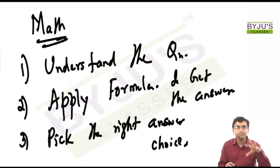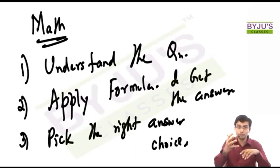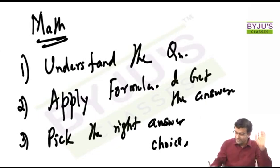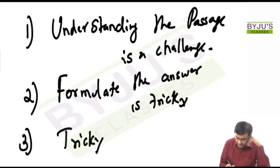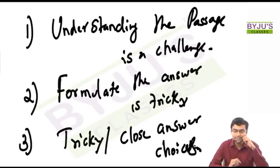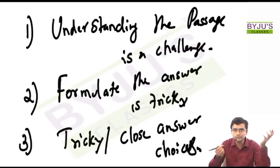Now go back to any math question — we never look at the answer choice and guess what the answer is. We try to solve it and then pick the right answer choice. We never try to understand the answer choice and guess from it. Whereas in RC, formulating the answer is very tricky. And then the final challenge with respect to RC is you have very tricky, close answer choices. These are the three major issues you face with RC, and this is typical of what I've seen with all my students — understanding the passage, formulating the answer, and the answer choices being pretty close.